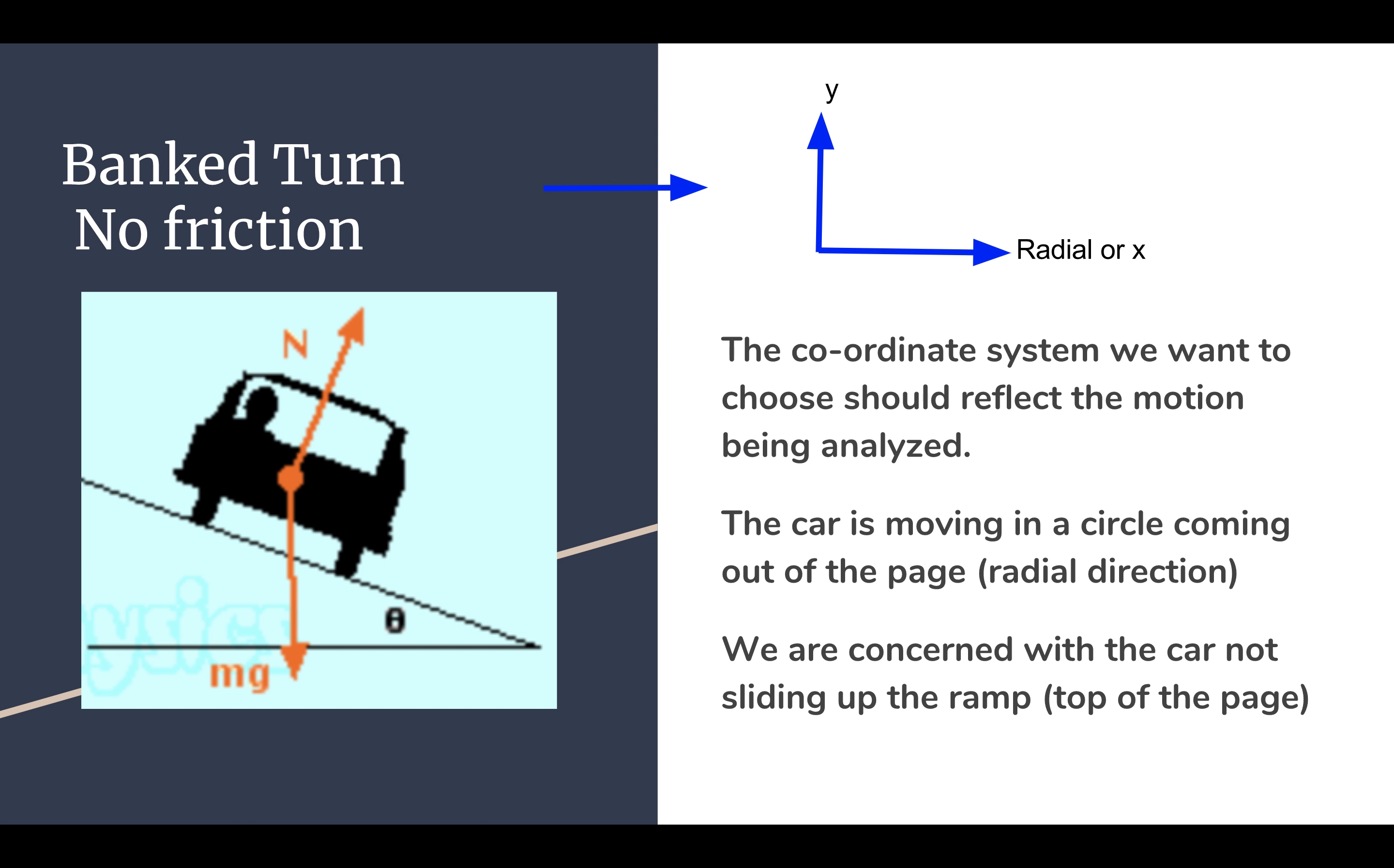So the coordinate system that we want to choose is going to reflect the motion that's being analyzed. We're no longer concerned with something a box or something sliding down the ramp. We have a car that is moving out of the plane of the page and is kind of rounding a turn on a banked curve.